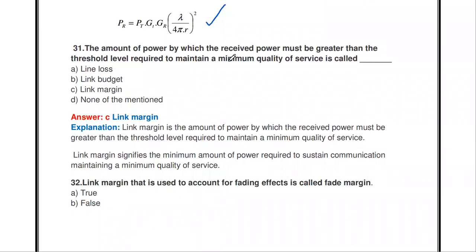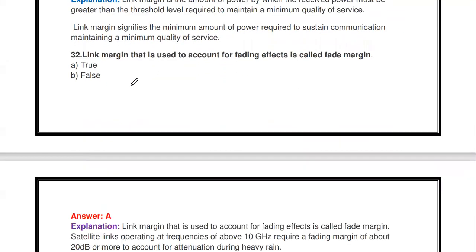Next questions: the amount of power by which received power must exceed the threshold to maintain minimum quality of service is called link margin. Also, the link margin used to account for fading effects is called fade margin — true.